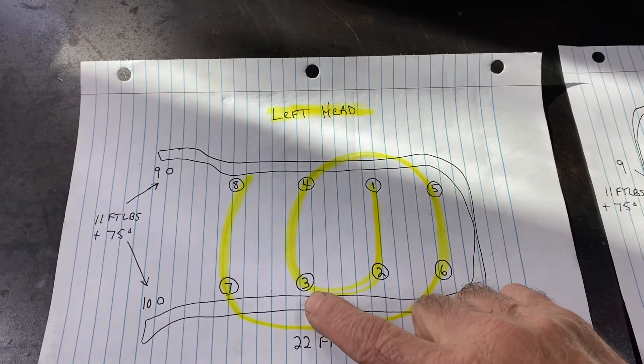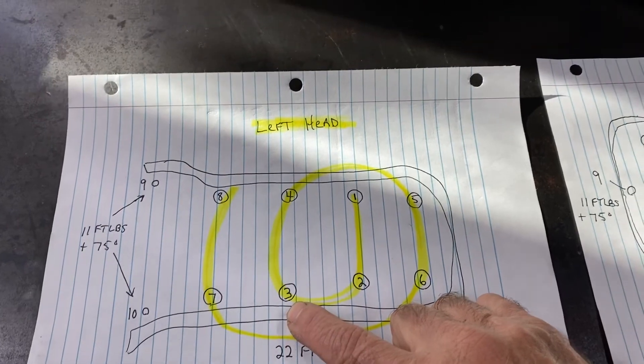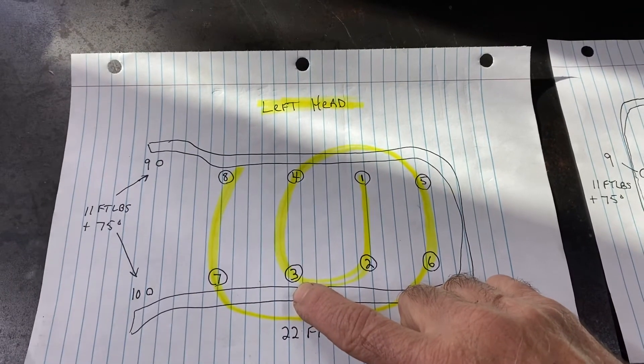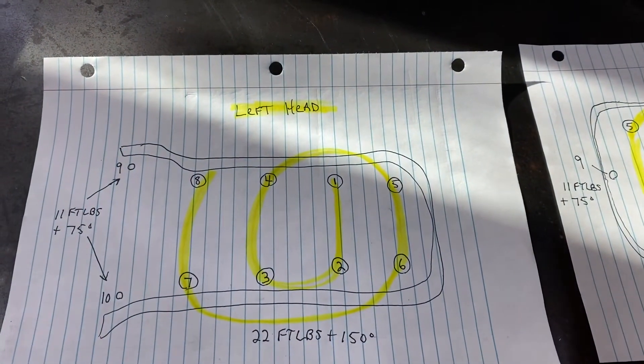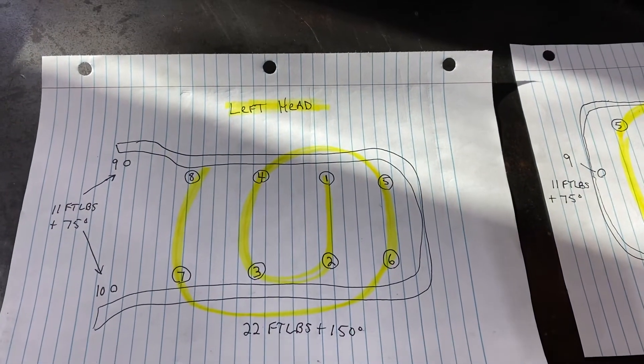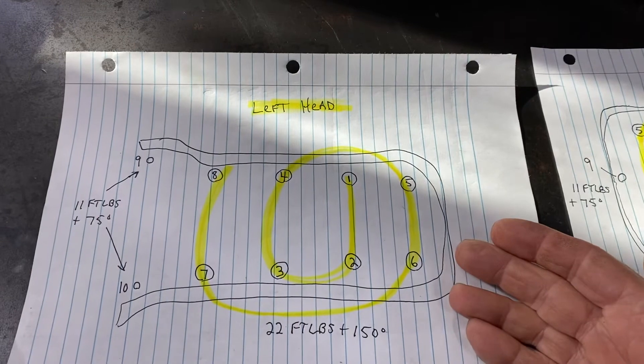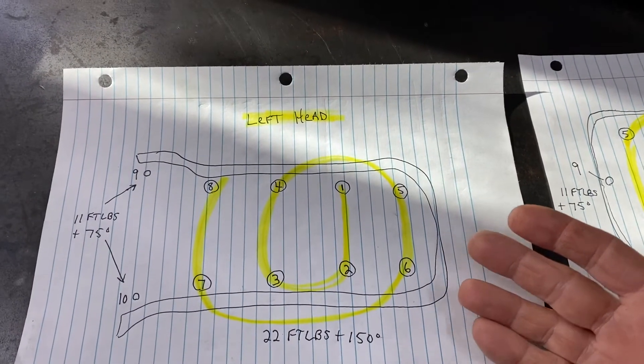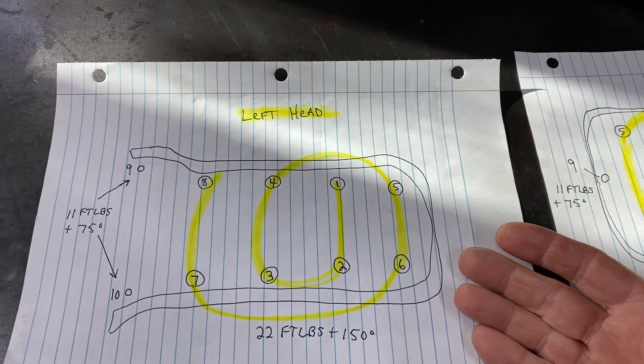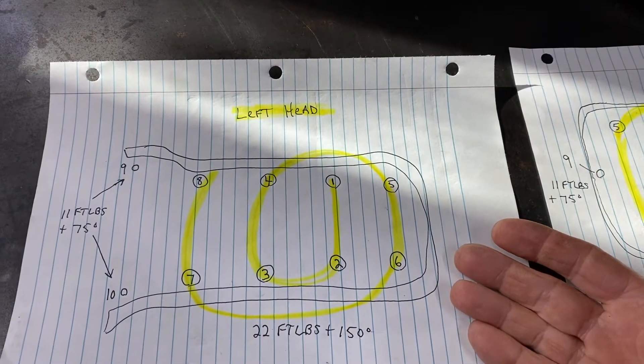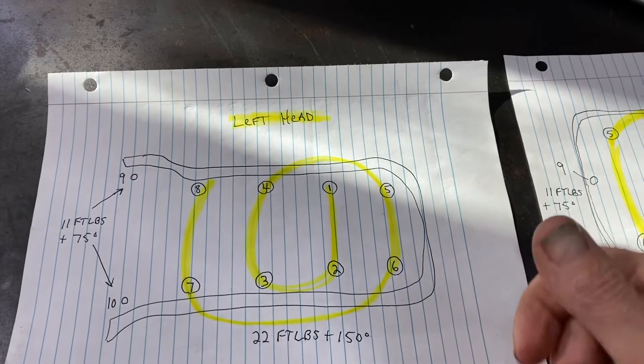I had no choice but to go back to putting this one to 22 foot-pounds then going to 150, and I was really concerned that the whole mess was out of order. What I ended up doing, because I was stuck in that situation, once I got them all to where I believe they were right, mostly what they're looking for is everything being equal.